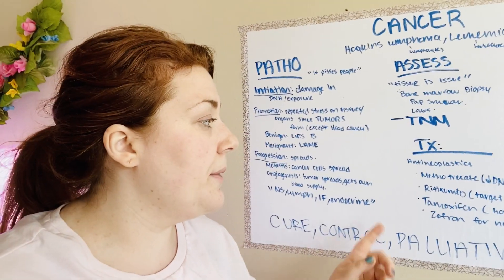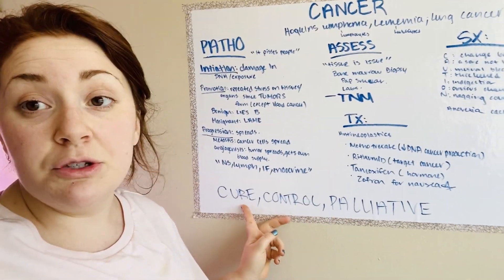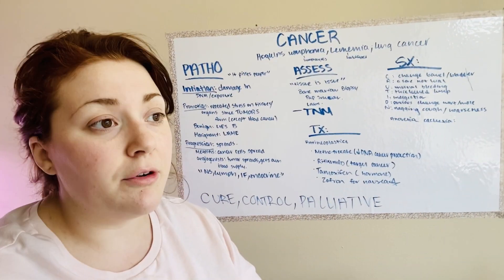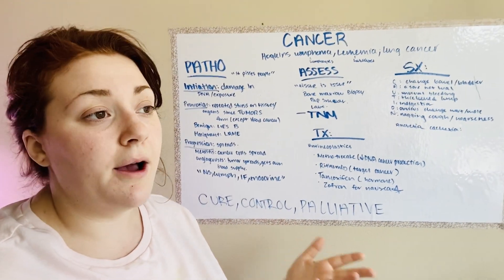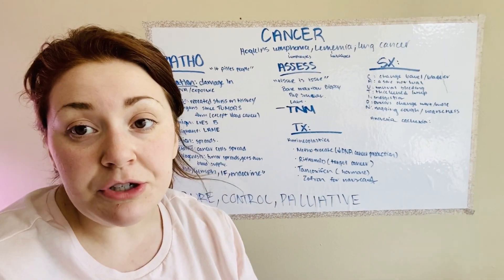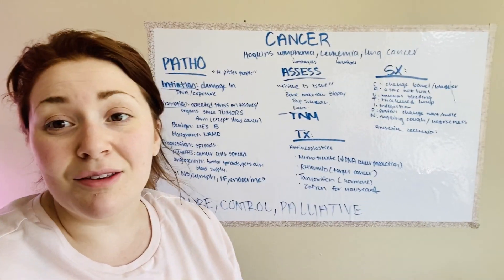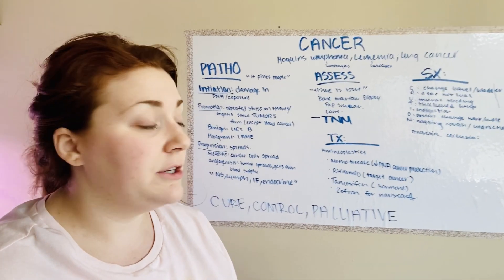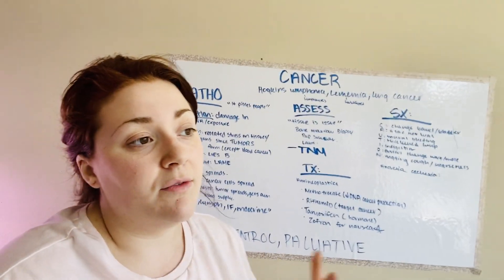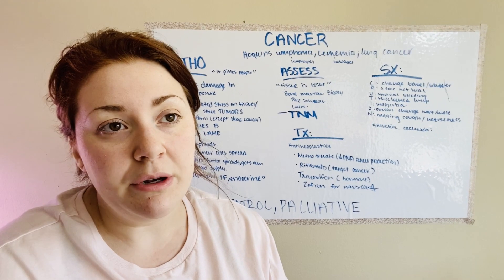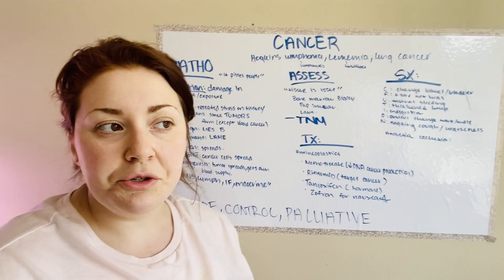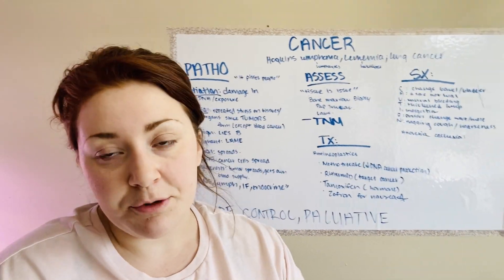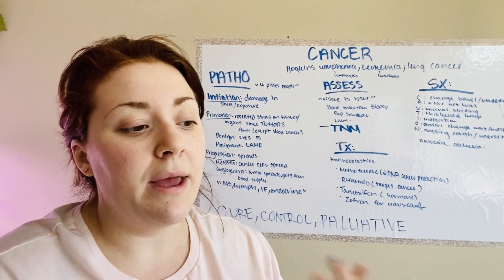With a patient that comes in with cancer, we either try to cure — which means it goes away forever, and that's what everybody hopes for — or control it by putting patients in remission, where they still have the cancer but don't have those symptoms and we're managing them well. Finally, palliative care is where they don't respond to initial treatment, but we still provide comfort measures, maybe try other treatments, and prepare them for end-of-life care.